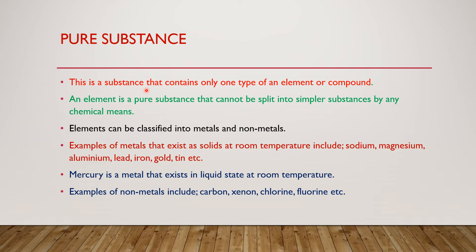We started these chemistry lessons by first defining what is matter. Under matter we have pure substances, compounds, and elements. A compound is a pure substance made up of elements that can be separated by chemical means but cannot be separated by physical means, while an element cannot even be separated by chemical means. Under pure substances we have elements and compounds, and impure substances are what we call mixtures.